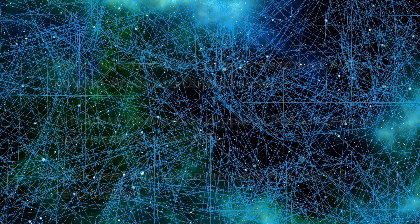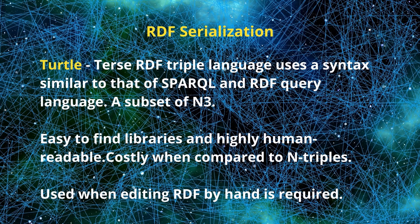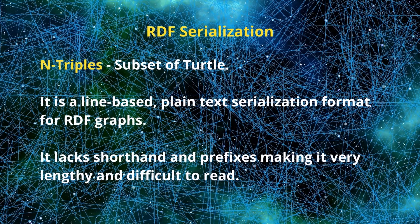Turtle, or Terse RDF Triple Language, uses a syntax similar to that of SPARQL, the RDF query language. It is a subset of N3, which makes parsing simpler, and it is easy to find libraries for Turtle. Turtle is highly human-readable; however, it is still more costly than N-Triples. This serialization is used if you need to edit RDF by hand. N-Triples is a subset of Turtle, which in turn is a subset of N3, so many libraries are available for it.